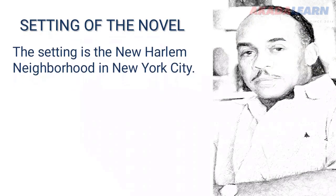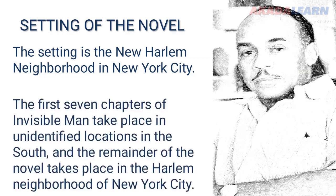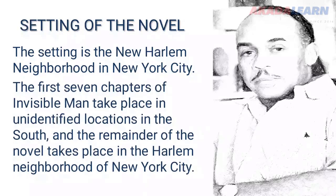Now we're going to look at the setting of the novel. The setting is in the Harlem neighborhood in New York City. The first seven chapters of Invisible Man take place in unidentified locations in the South, and the remainder of the novel takes place in the Harlem neighborhood of New York City.